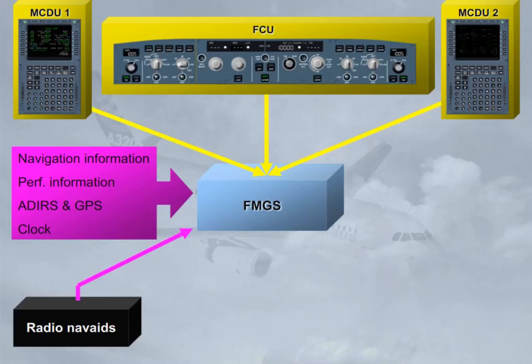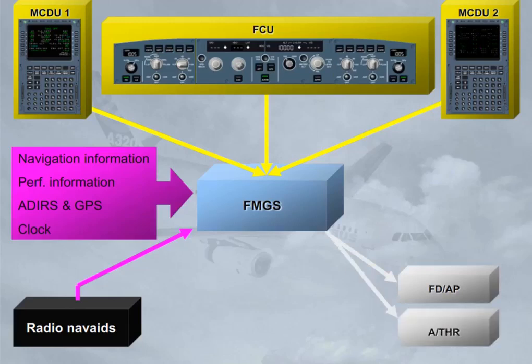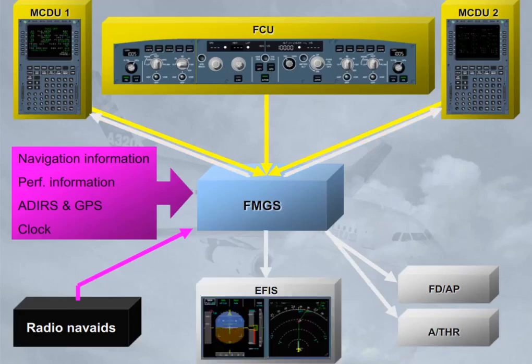The FMGS provides outputs to the Flight Directors, FDs, and Autopilots, APs, for pitch, roll, and yaw control. The Autothrust, ATHR, for thrust control. The MCDUs and EFIS for the display of information. And the navigation radios for the automatic tuning of radio aids.